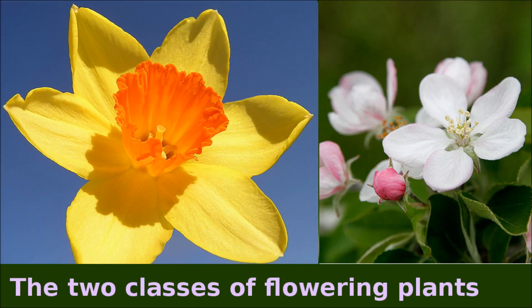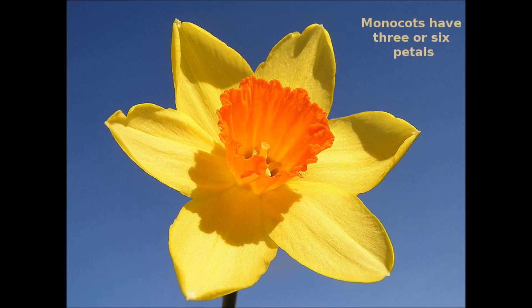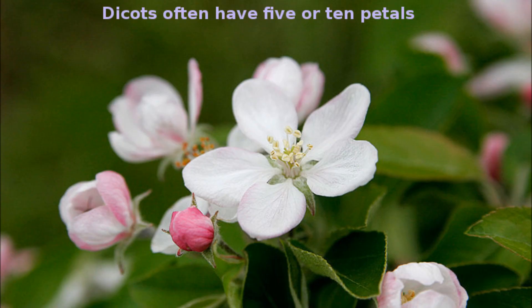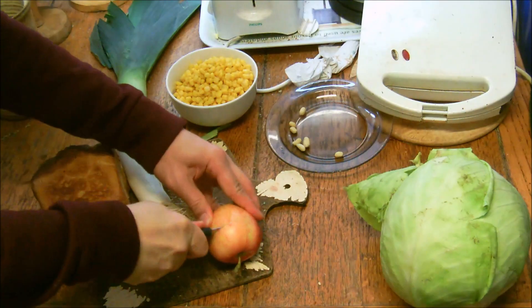There are two main types of flowering plants: monocots and dicots. Monocots generally have a multiple of six petals on their flowers, like this daffodil or narcissus. Dicots usually have a multiple of five or ten petals on their flowers, like this apple blossom.